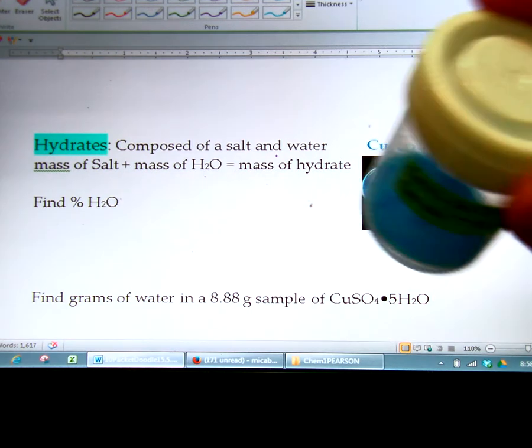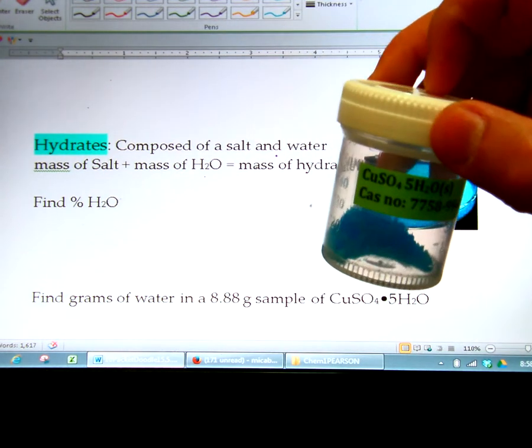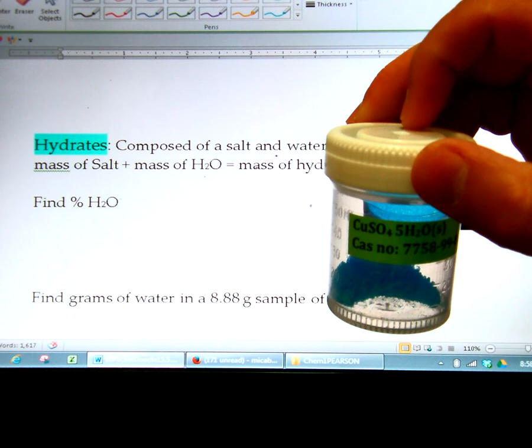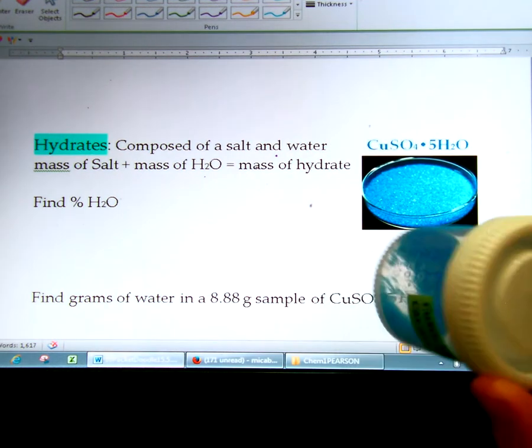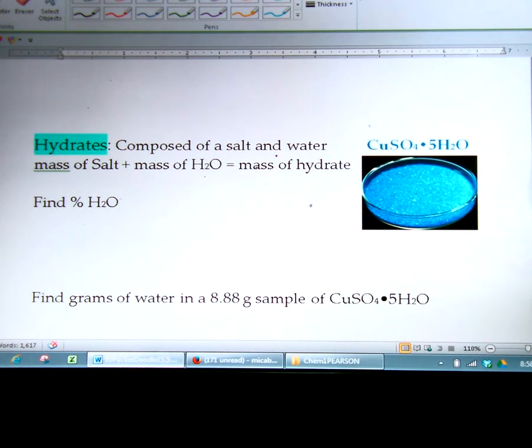You actually have a sample of this in your bin of chemicals and this is your CuSO4·5H2O. You can see that it is a blue solid and this solid actually has water and salt combined. Even though it looks dry, it actually has water in it.